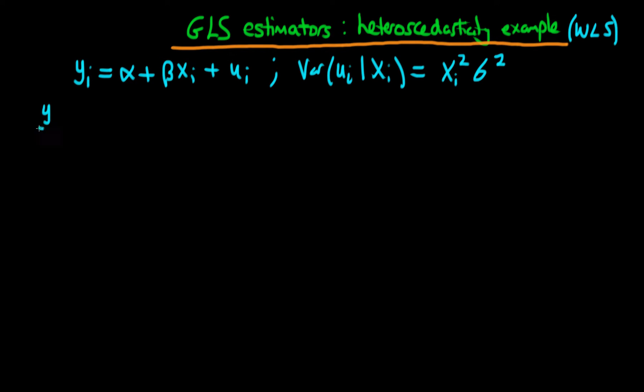So we know we can rewrite this in matrix form as y is equal to x times beta plus u. And we can rewrite the variance of, now as a random vector u, given we have our matrix of our independent variables x.